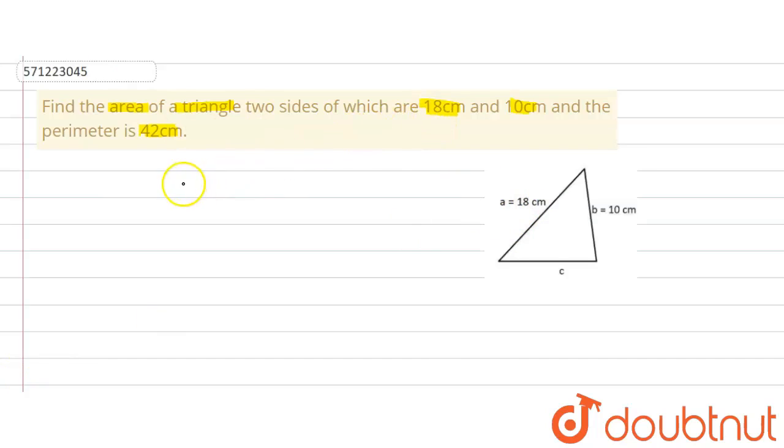So first of all we will write down what has been given in the question. We are given the sides, two sides, a is equal to 18 cm, b is equal to 10 cm and we are also given the perimeter which is 42 cm.